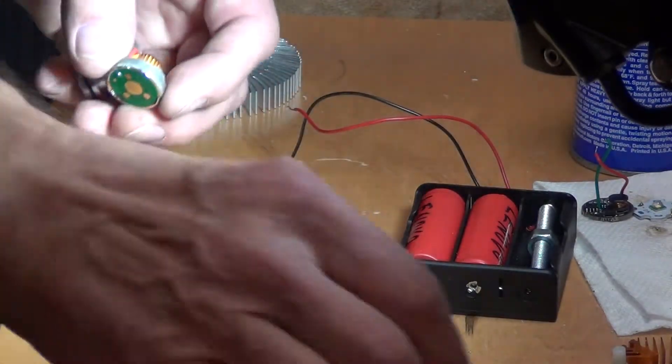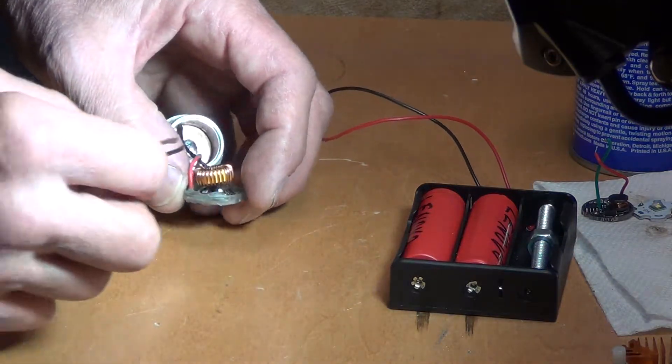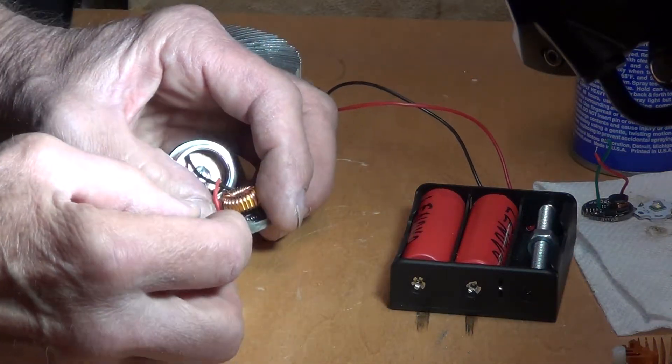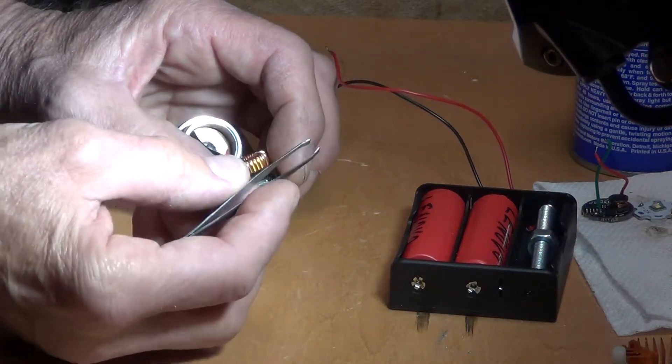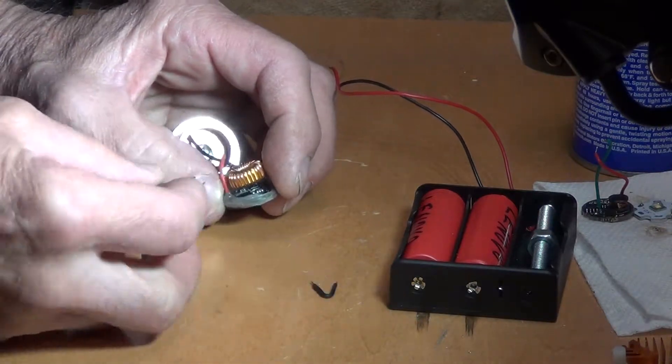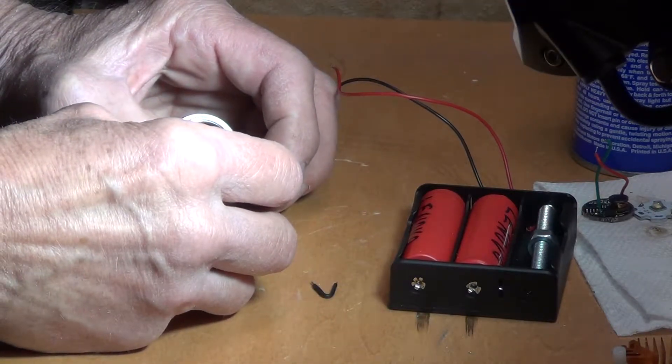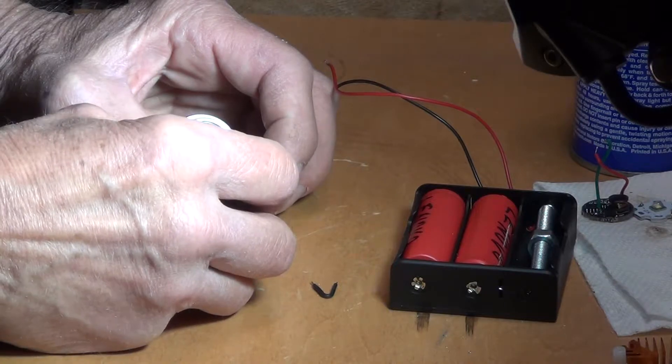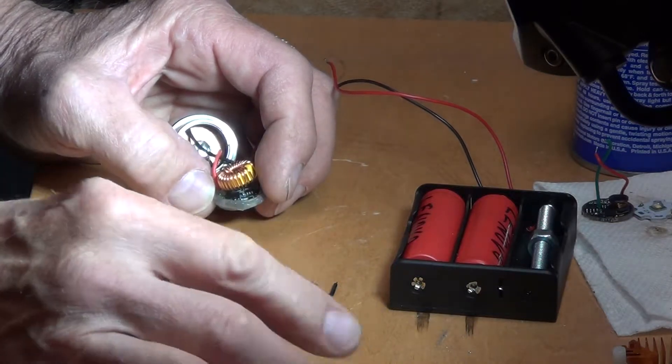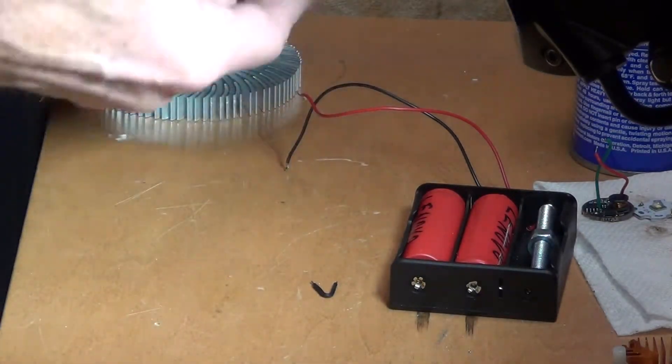If you're gonna hit the right capacitor, it doesn't matter, you cannot really mess anything up. Just get a piece of wire and just bridge over the capacitor, pretty much short it out.